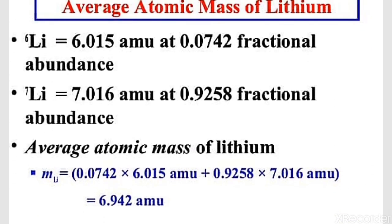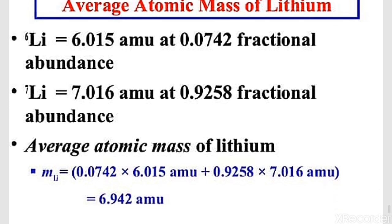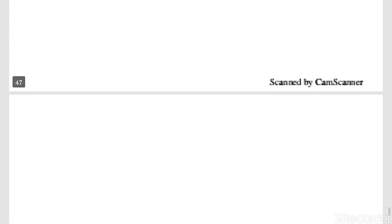To find the average atomic mass of lithium: lithium has 2 isotopes, Li-6 and Li-7. Li-6 has a fractional abundance of 0.0742 and Li-7 has 0.9258. Average atomic mass = (6.015 × 0.0742) + (7.016 × 0.9258) = 6.941 AMU. So lithium has an average atomic mass of approximately 6.941 u.